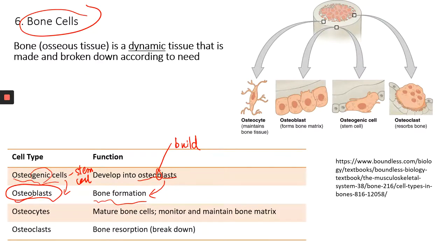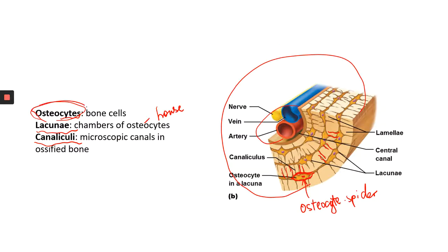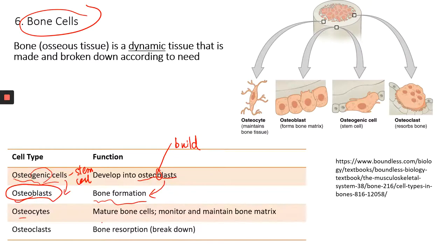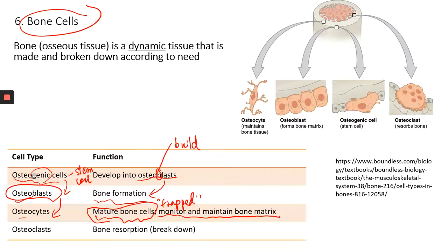Osteocytes are mature bone cells that actually come from osteoblasts. As osteoblasts synthesize bone matrix, eventually they surround themselves with bone matrix and they're not going anywhere — they're kind of trapped. But that doesn't mean they're doing nothing; they continue to monitor and maintain bone matrix. They can also send signals to other bone cells like osteoblasts or osteoclasts to tell them what needs to be done and where to remodel the bone.